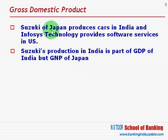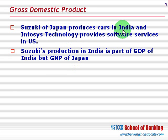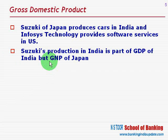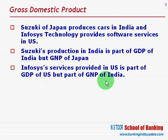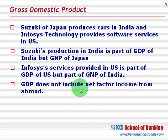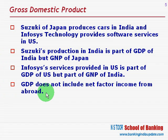Because Suzuki is a Japanese company, its production is considered for the GNP of Japan. Suzuki's production in India becomes part of India's GDP because it is produced in India, and it becomes part of Japan's GNP. Infosys services provided in the US are part of the GDP of the US, but they are part of the GNP of India. So GDP does not include net factor income from abroad — that is how this concept of GDP can be explained.